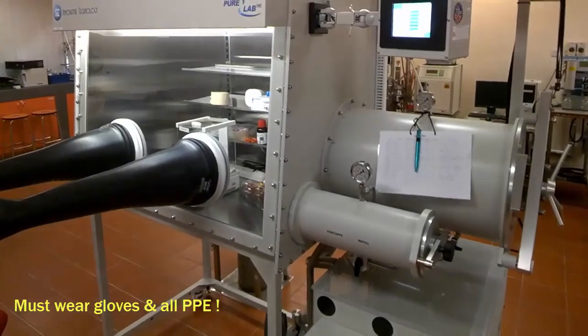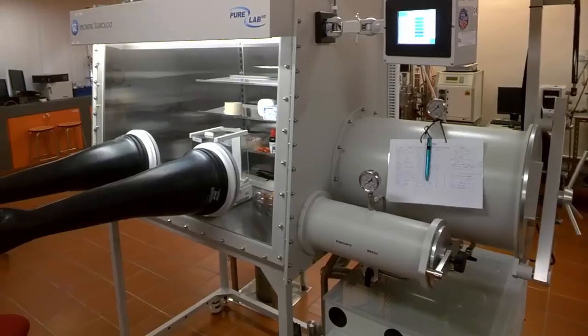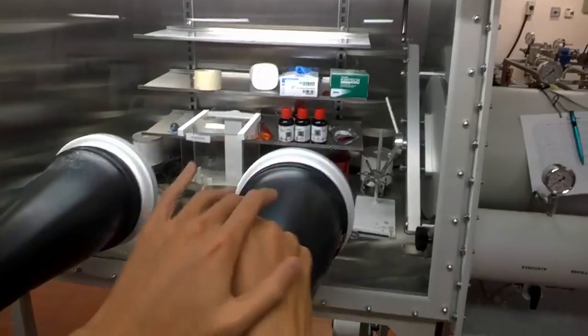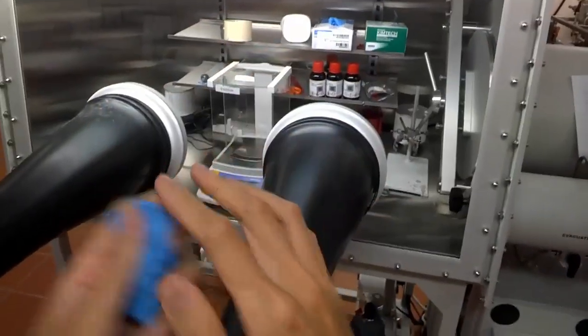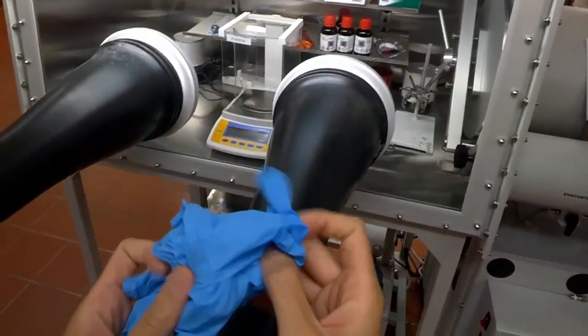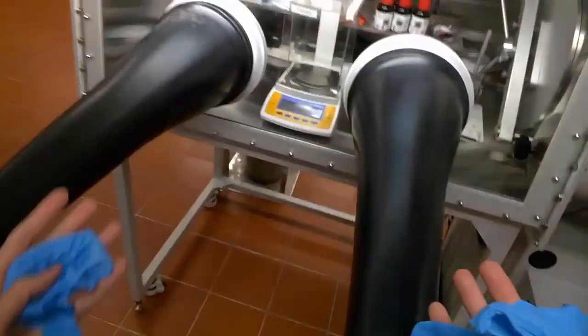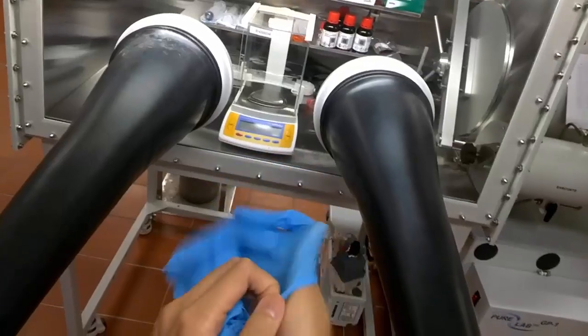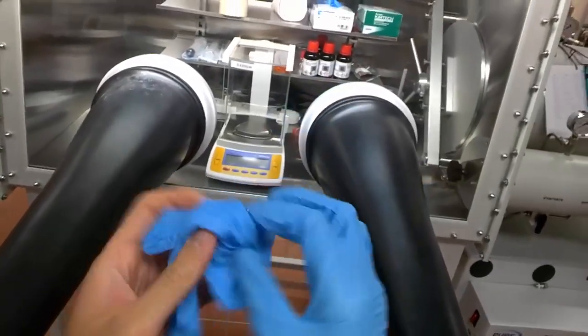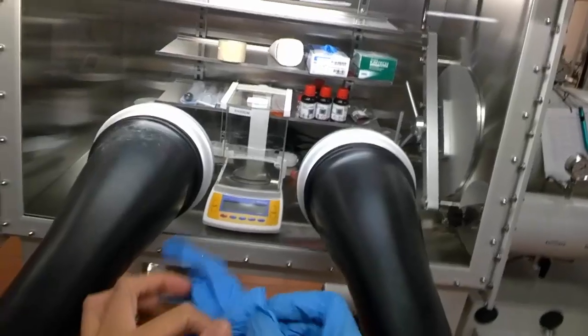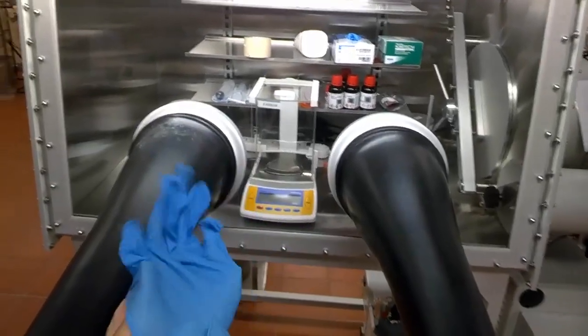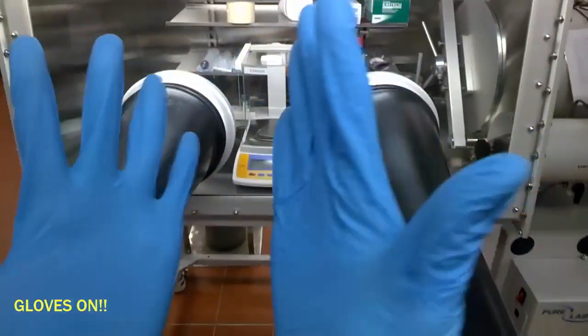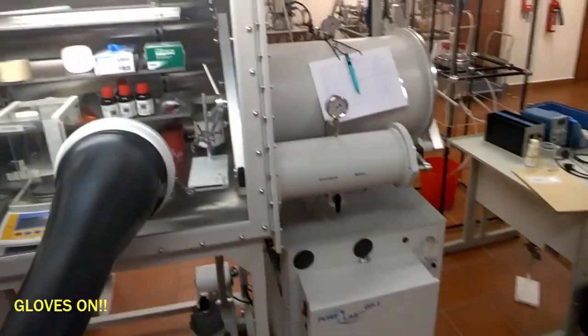Before you start, ensure that your hands are clean and you are wearing a pair of gloves. You cannot just put your naked hands inside the box gloves because there may be contamination due to other uses next time. So, put on a pair of gloves. Of course, PPE is a must. Your safety goggles. Lab coat. Covered shoes. Right, so now we put on the pair of gloves. So, here we go. Gloves on. And we are good to go.